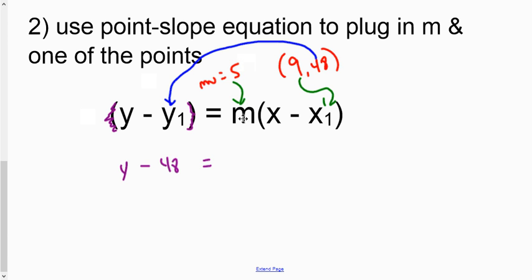And the m is a 5. Plug that in for the m. x stays right there, but the x1 is what I need to make into a positive 9.